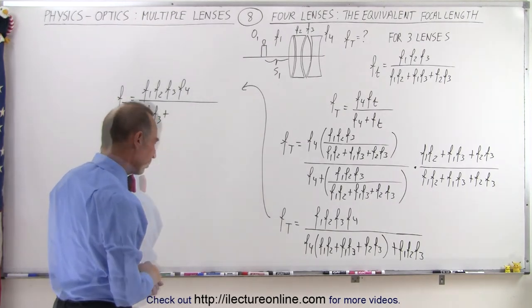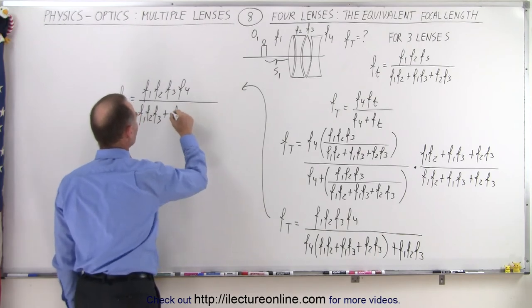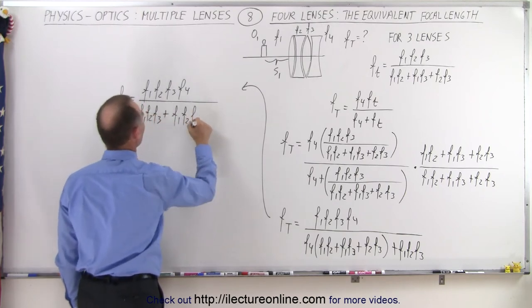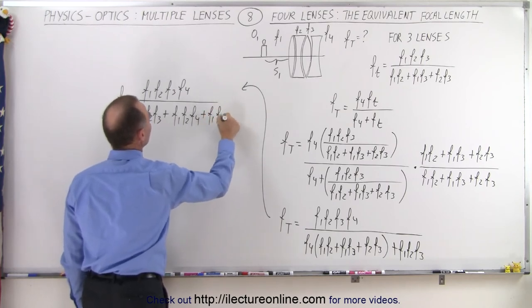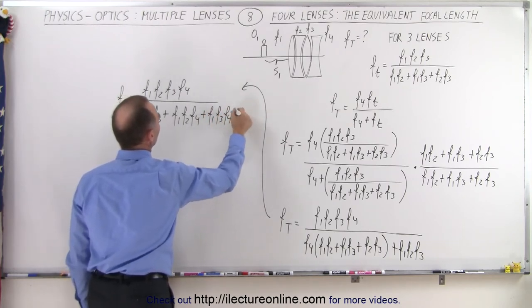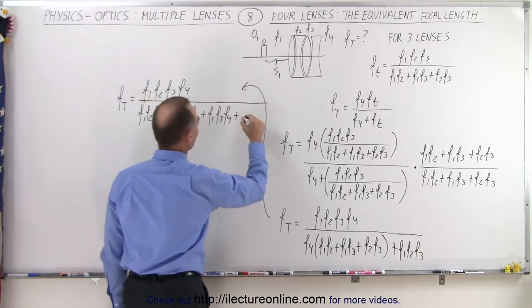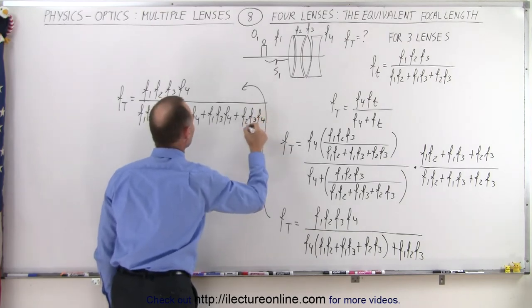What would be a good order to put that in? Let's do it like this. How about F1 F2 F3, then F1 F2 F4, and then plus F1 F3 F4, and then plus, make this a little longer, and then we have the last one which is F2 F3 F4. Yeah, that's probably the best way to write it.